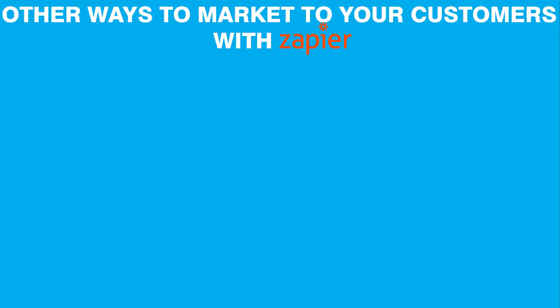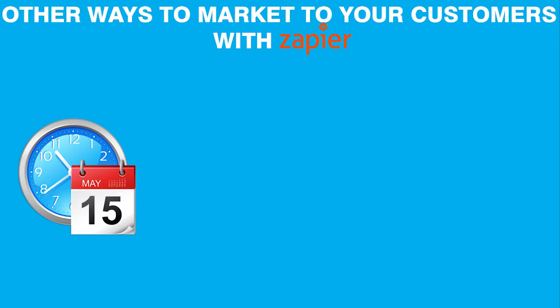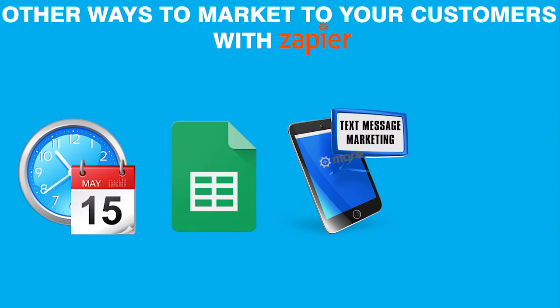Other common ways of using Zapier include scheduling emails or promotions to send to your customers, updating Google Spreadsheets, texting your customers, and a lot more.